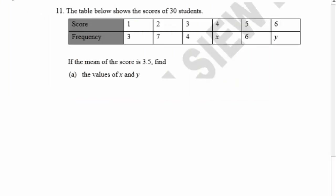Hi everyone. In this video we're going to discuss question number 11. The table shows the scores of 30 students. If the mean of the score is 3.5, find the value of x and y.